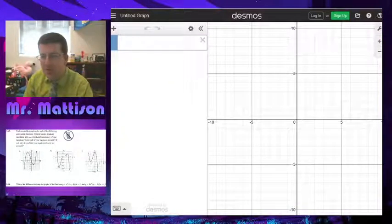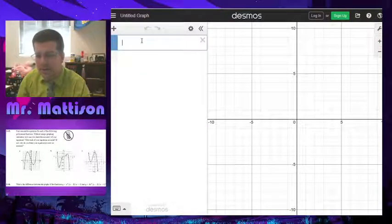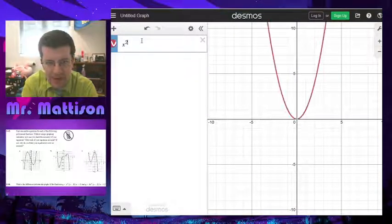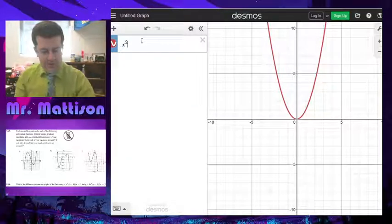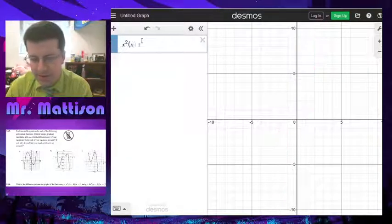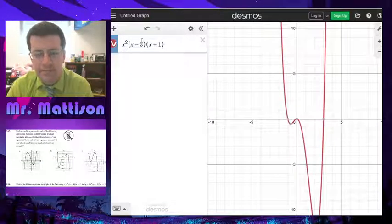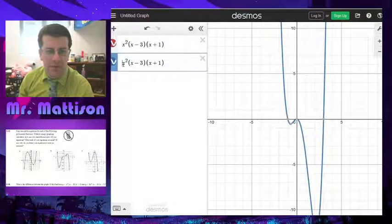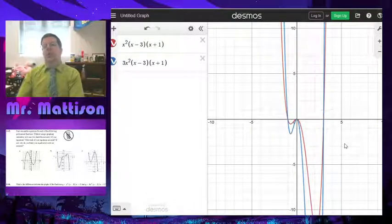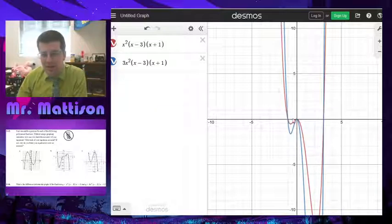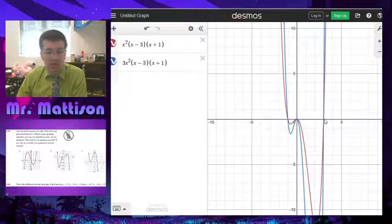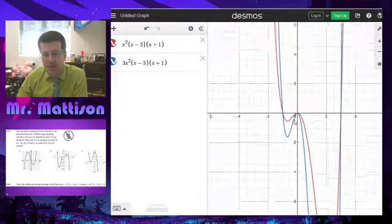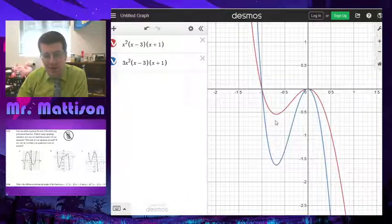So, I pull this up. So, we are graphing. It was x to the second times x minus 3 times x plus 1. And then, so that's the A original. Now, if I take that same graph, let's put a 3 in front of it. How is it different? Well, all of our x-intercepts are exactly the same. I have one here. I have a double here. And I have one here. Which is going to be the same because I have those same intersections. But the 3 on this blue one is making it a lot taller.